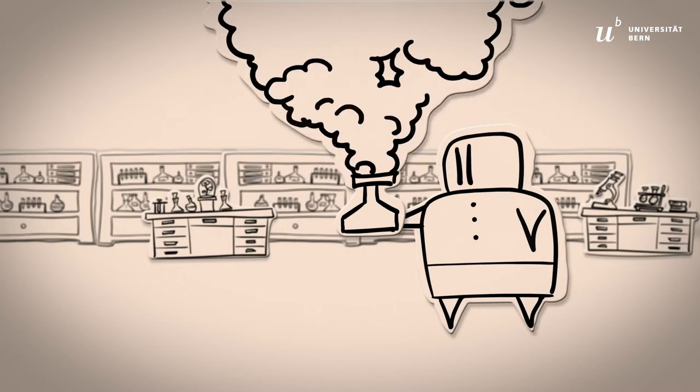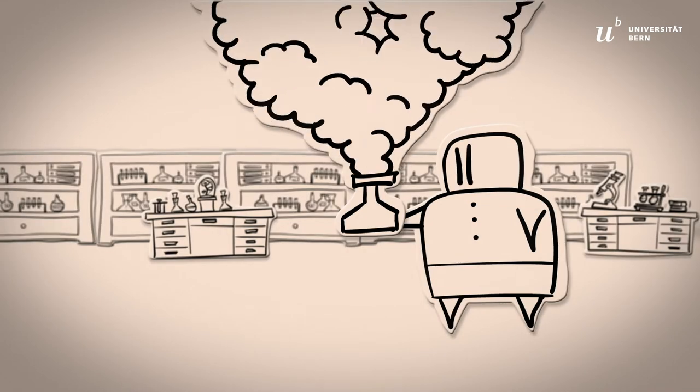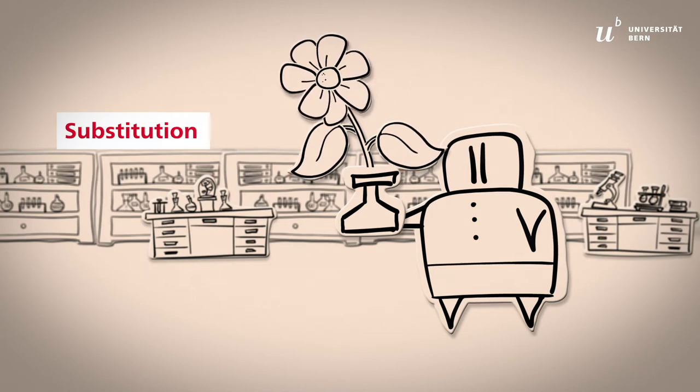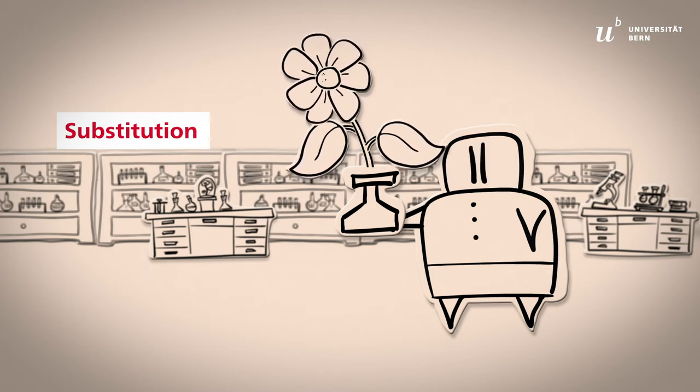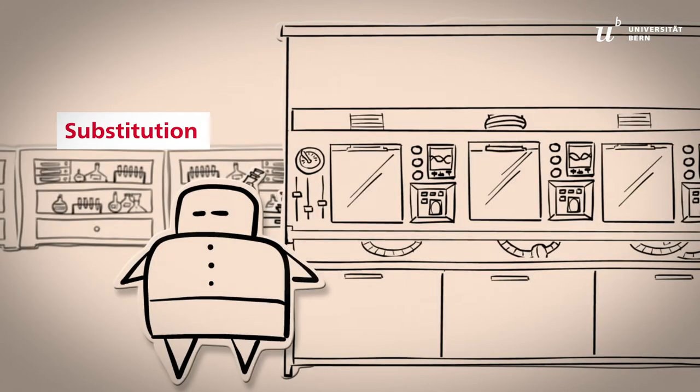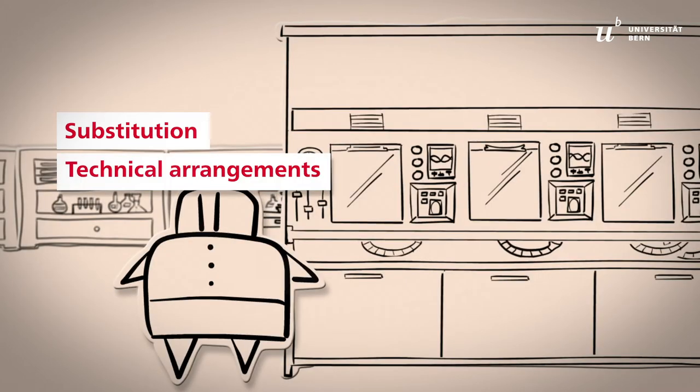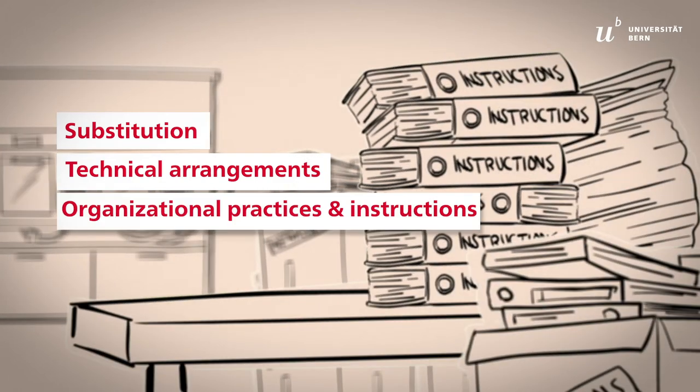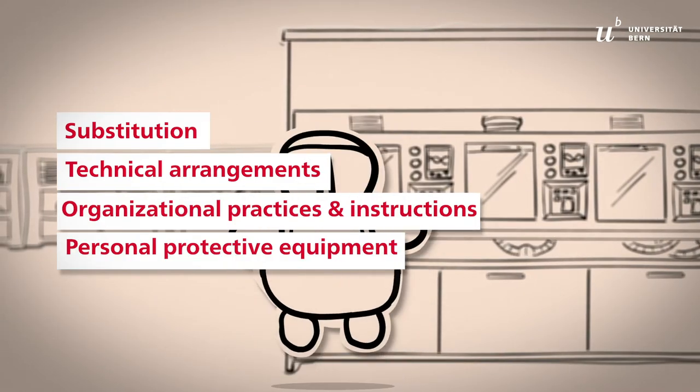The safety measures are governed by four principles. The first is substitution. Whenever possible, replace the hazardous substance with a safer alternative. The other principles concern technical arrangements, organizational practices and instructions, and personal protective equipment.